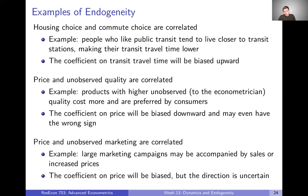Another example is an unobserved marketing campaign. In IO or marketing contexts, that can lead to correlations with price. Large marketing campaigns may be accompanied by sales, or in a long-run equilibrium they may increase demand and actually lead to increased prices. So price could go up or down — it could be positively or negatively correlated with advertising. In that case, our coefficient on price will be biased, and we won't even know the direction of the bias. We'll know our answers are probably wrong, but not even which direction they're wrong in.